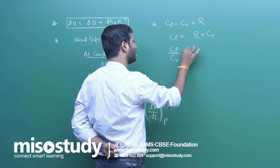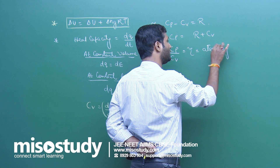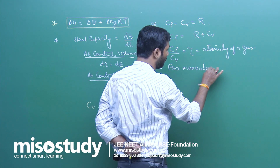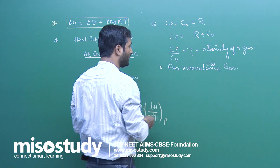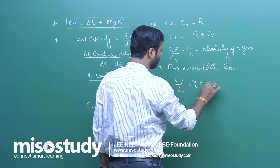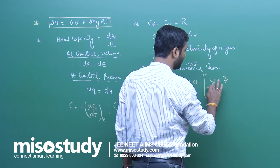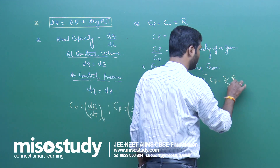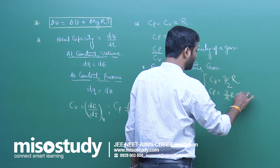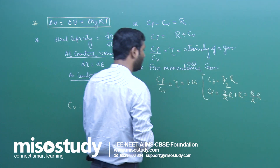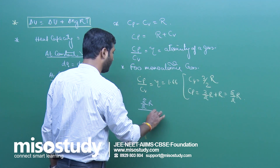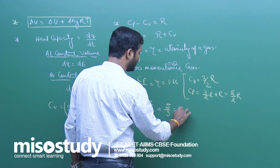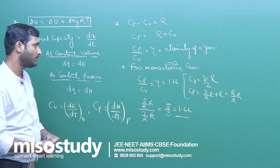Cp upon Cv is equal to gamma — this is called the atomicity of a gas. For a monoatomic gas, Cv is equal to 3/2 R and Cp is equal to 3/2 R plus R, which equals 5/2 R. Therefore, Cp upon Cv equals 5/2 R upon 3/2 R, which gives 5/3, equal to 1.66.